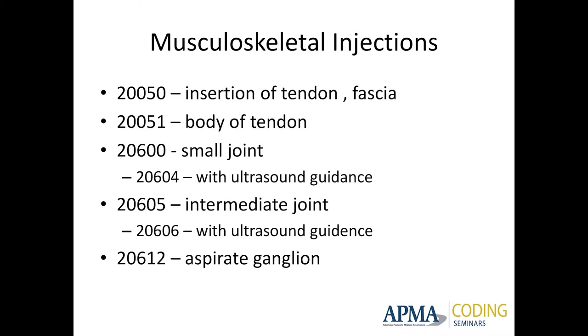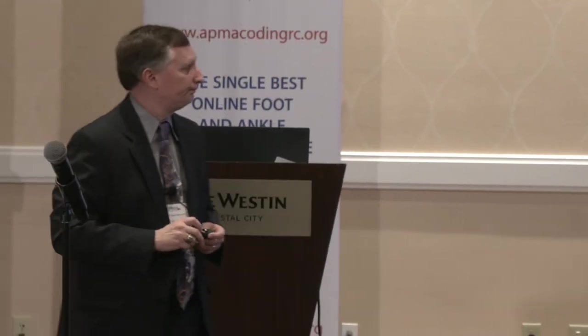61200 is for aspirating a ganglion cyst — it doesn't matter where it is. If you think it's a ganglion or mucoid cyst and you're going to aspirate it, that's the code to use. Q: If doing an intermediate joint with ultrasound guidance using the combined code, do you still need a separate ultrasound report? A: No. You can combine them into one report, but you need something in there that says you visualized the joint with ultrasound using a specified megahertz. You get one code — not two codes just because you wrote two reports.